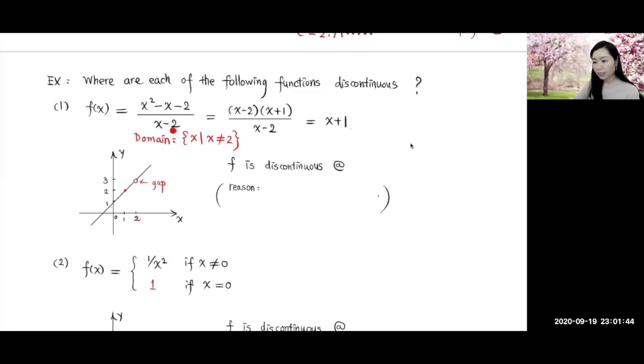because this function is not defined when x equals 2, because when x equals 2, the denominator equals 0. So we have to take away this single point here when x equals 2. So we have 2 here, we go up, hit the graph, and we make this a gap.